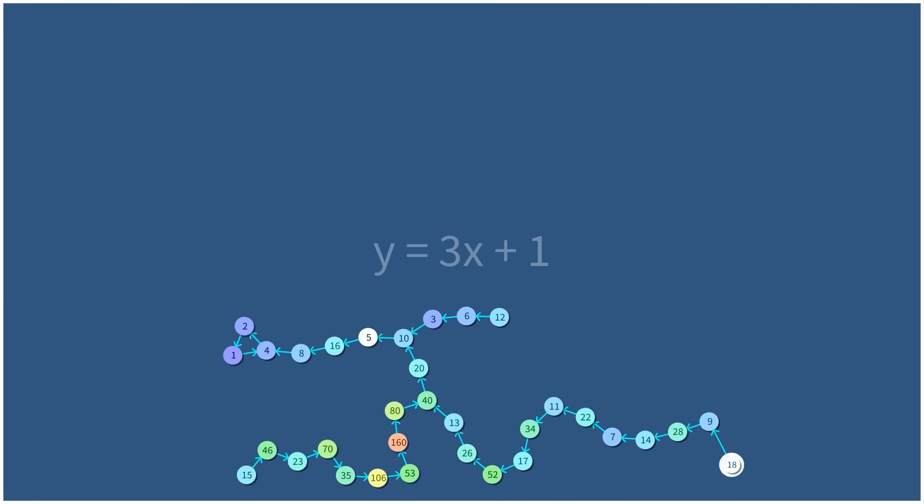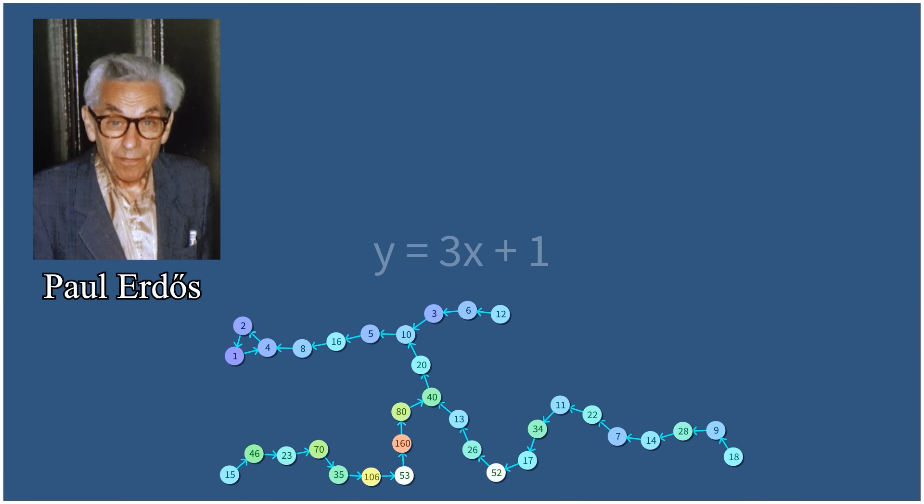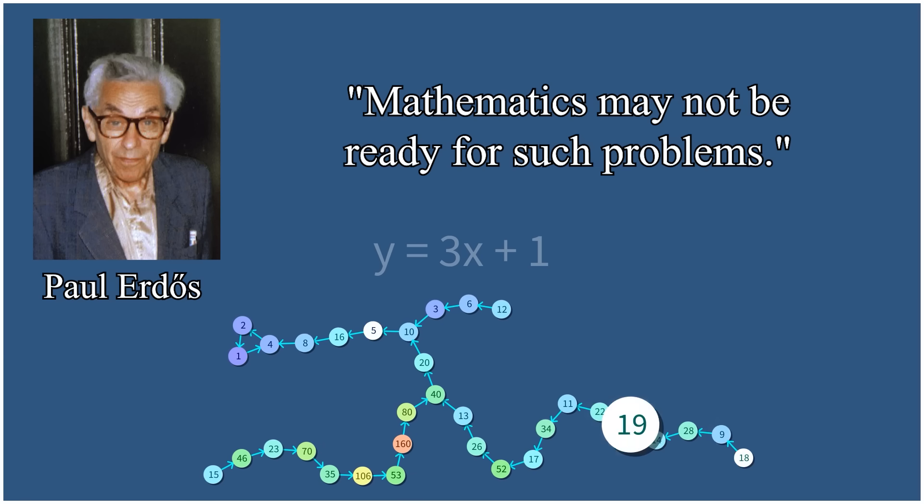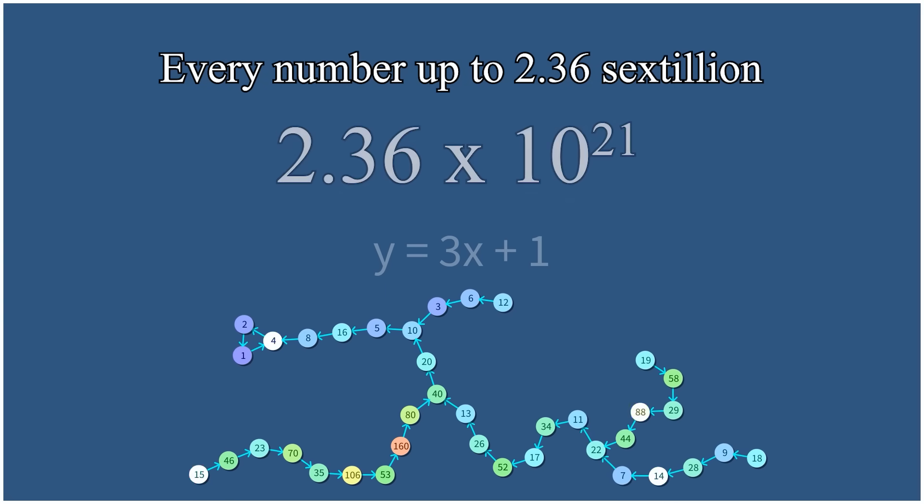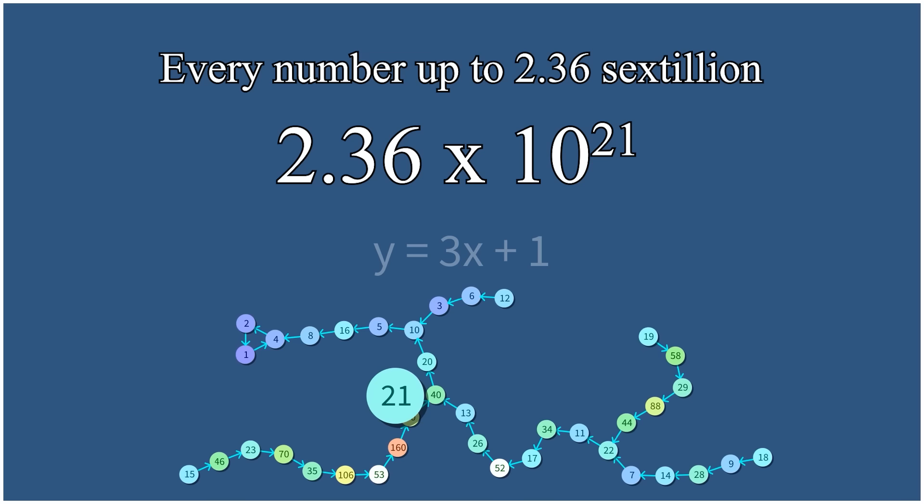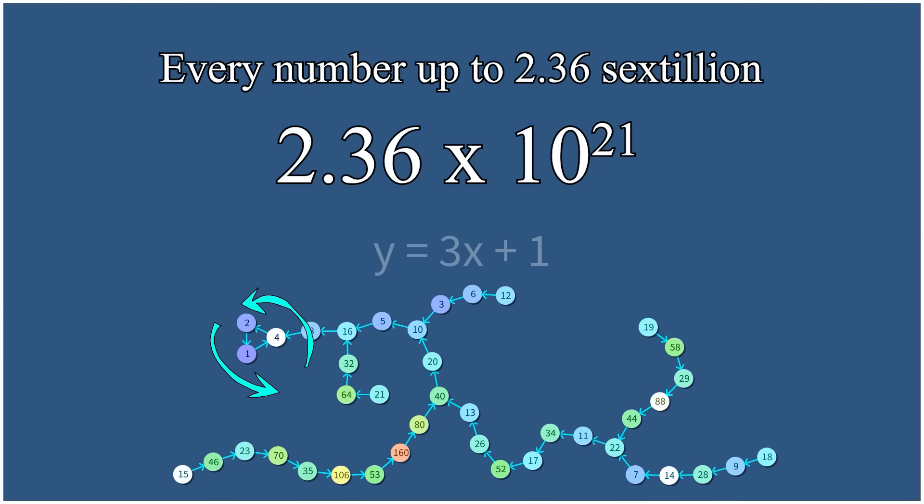To describe how hard this conjecture is to prove, Paul Erdos famously said, mathematics may not be ready for such problems. But computers have tested every number up to 2 sextillion, that's 10 to the 21st power, and all of them have eventually fallen back to 421421.